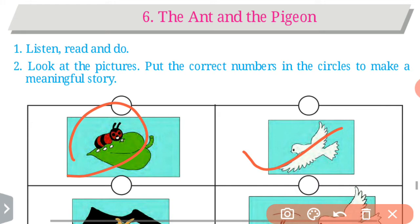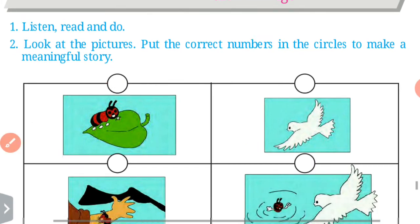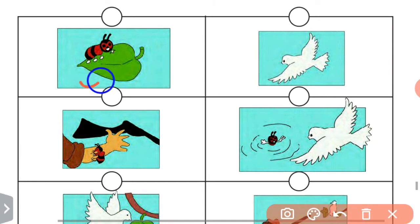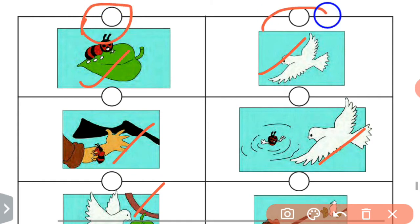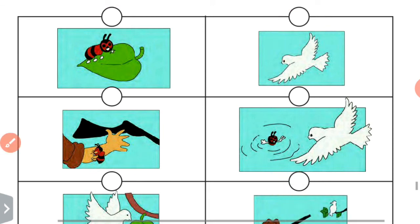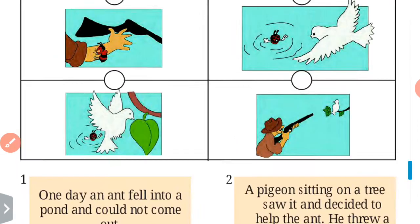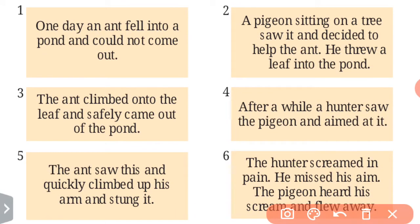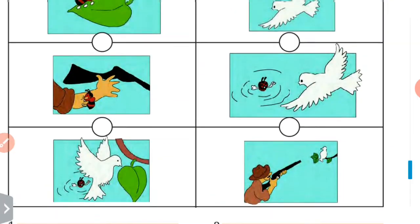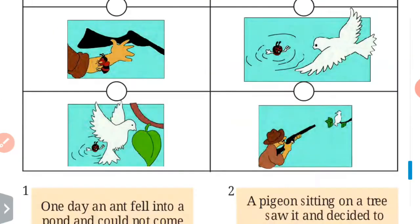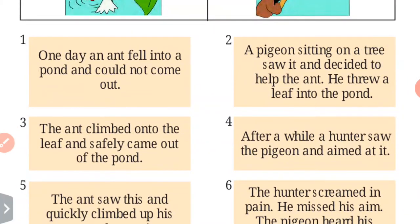So what to do? We have to look at these pictures and you have to put the correct number in these circles to make a meaningful story. Here are given circles, so you have to put the correct number. See, here are given some sentences, six sentences and six pictures, so you have to correlate these pictures and sentences and put the right number.